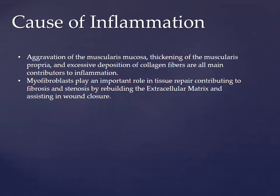Some causes of inflammation of the endothelium in the intestine include aggravation of the muscularis mucosa — a thin layer of smooth muscle in the gastrointestinal tract — and thickening of the muscularis propria, a region of muscle in the organs responsible for movement such as peristalsis. Excessive deposition of collagens is also a main factor in the inflammation. Myofibroblasts play an important role in tissue repair, contributing to fibrosis and stenosis by rebuilding the extracellular matrix and assisting in wound closure. Fibrosis and stenosis refer to obstructions or the formation of excess fibrous connective tissue.